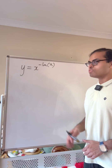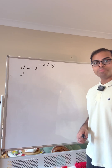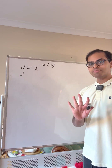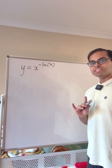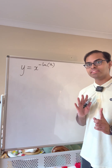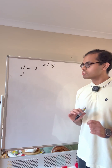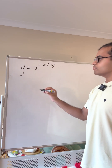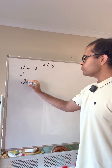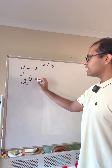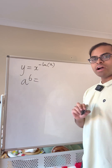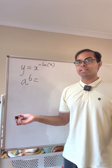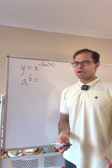Let's graph the function y equals x to the power of minus log x. There are three steps for graphing. Step one is to find the domain of the function. There's an important formula: a to the power b — how do you define a^b if a and b aren't integers, like pi to the power pi?